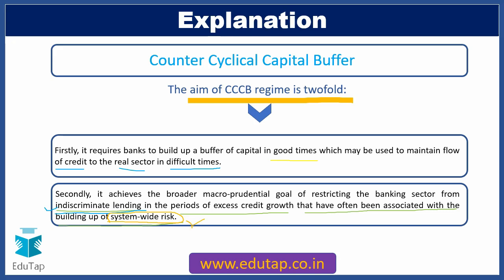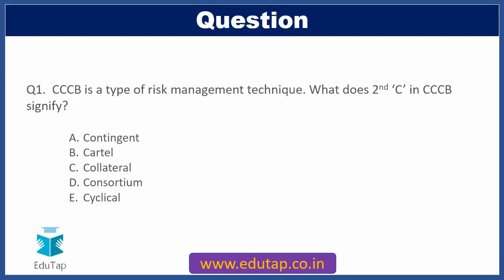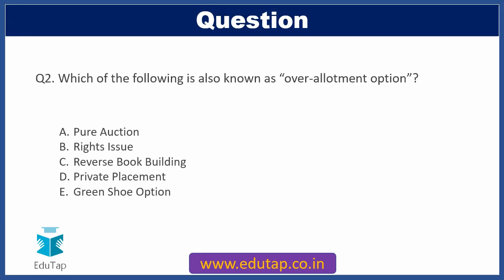So that was a comprehensive explanation. Moving back to question one: the full form of CCCB is Counter Cyclical Capital Buffer, so the second C signifies 'cyclical' — Option E is the correct answer. Moving on to the second question: which of the following is also known as the over-allotment option? Option A: Pure Auction, Option B: Rights Issue, Option C: Reverse Book Building, Option D: Private Placement, Option E: Green Shoe Option.